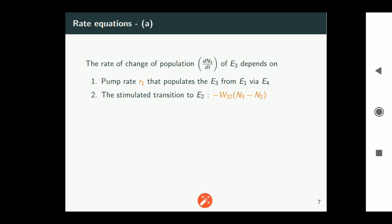Then stimulated transition to e2. So if there is stimulated transition from e3 to e2, that is given by this expression minus w32 times (n3 minus n2). The sign conventions followed is standard. Those which increase population of e3 are given positive sign and those decrease the population of e3 will take negative sign here.